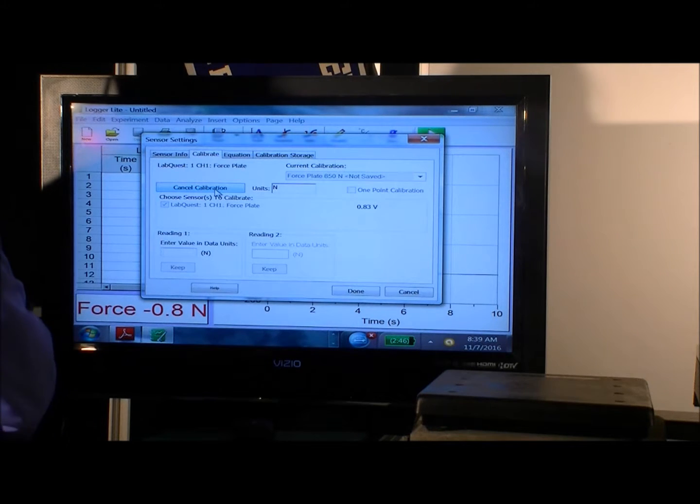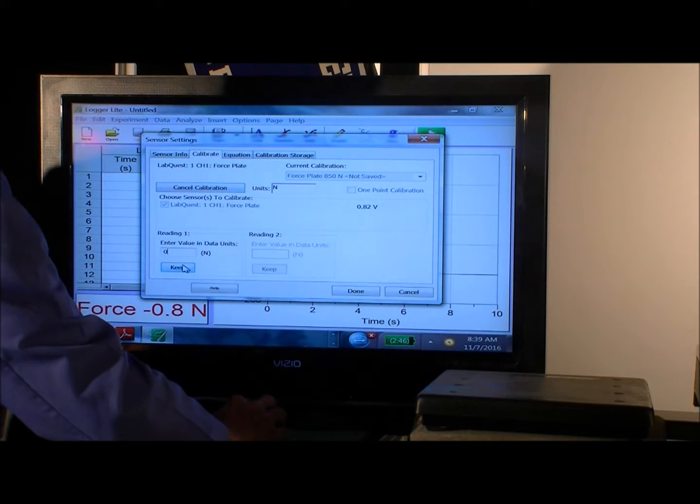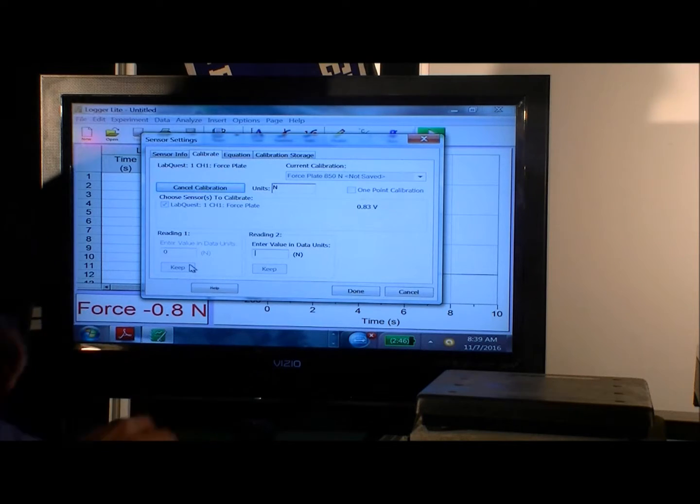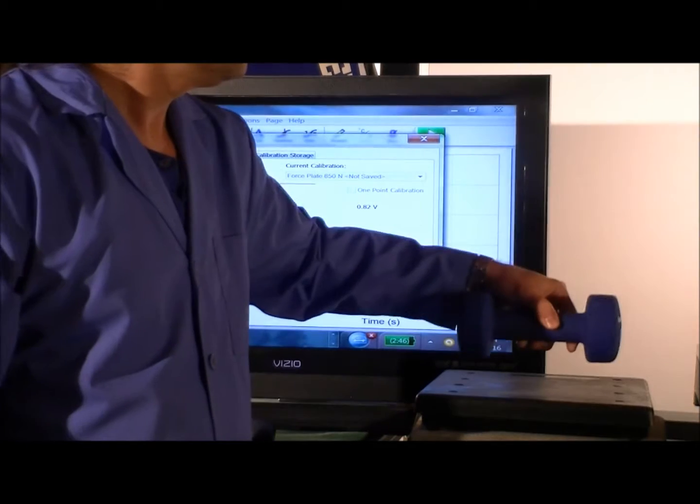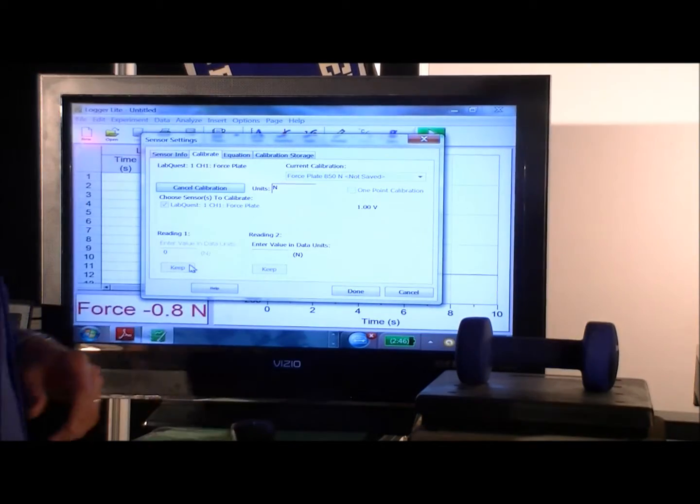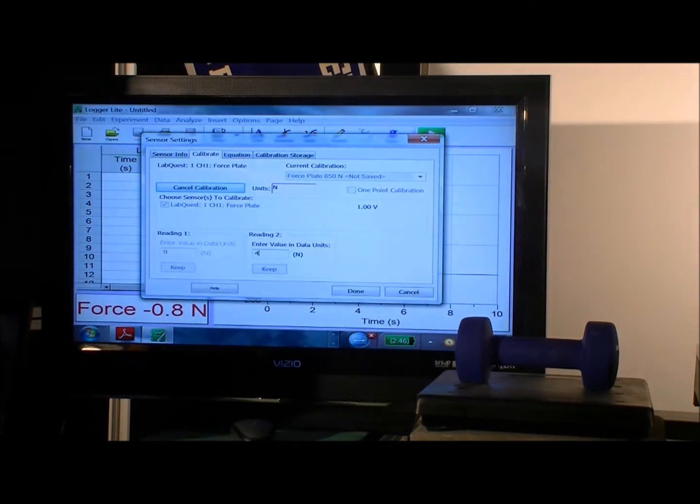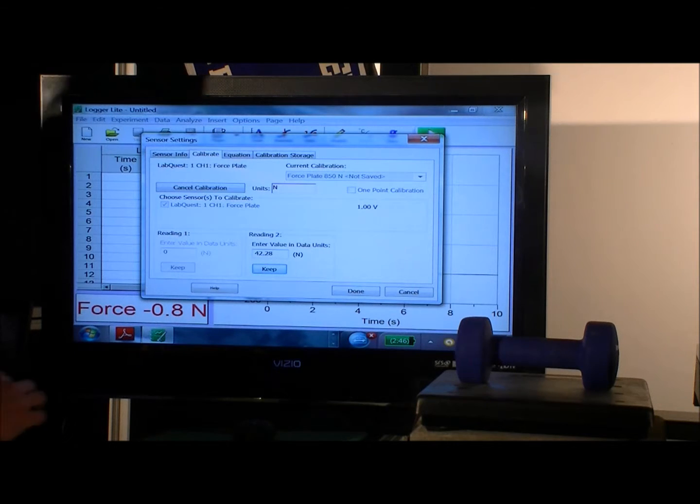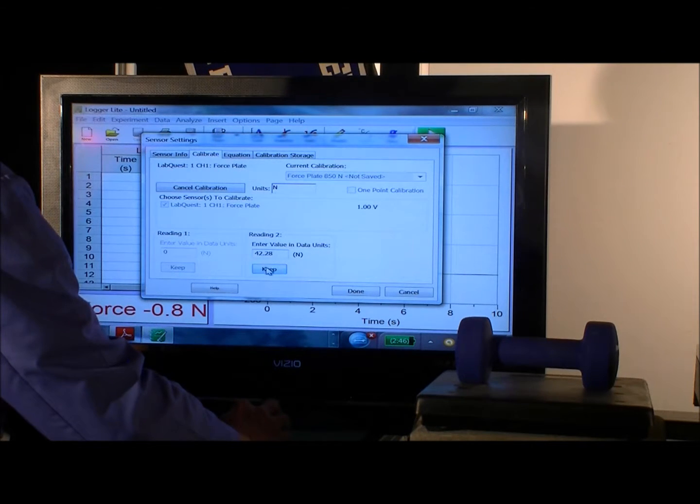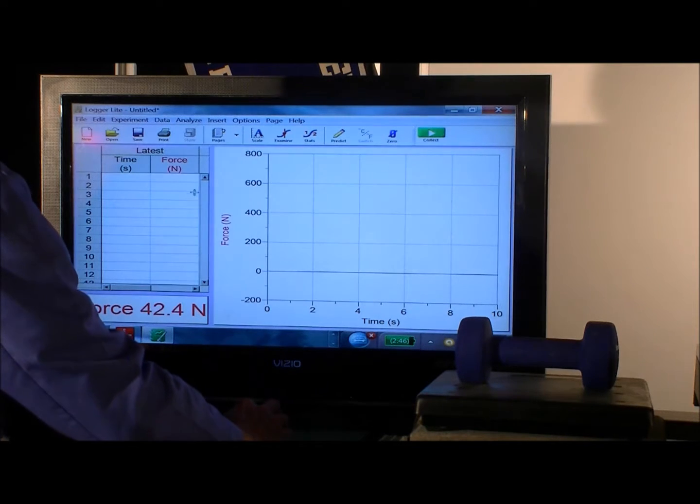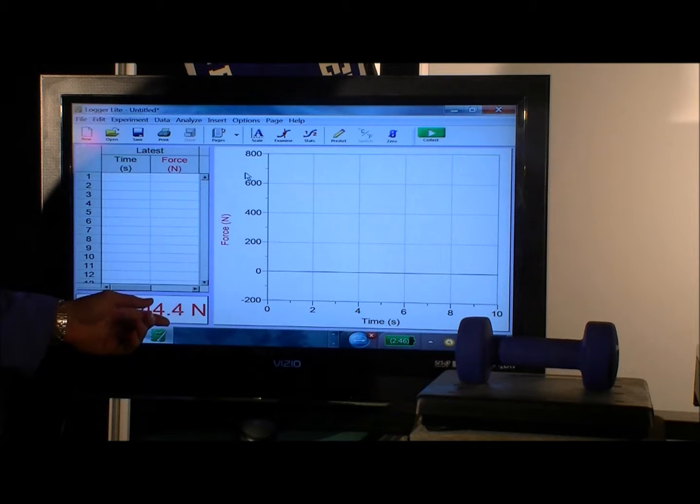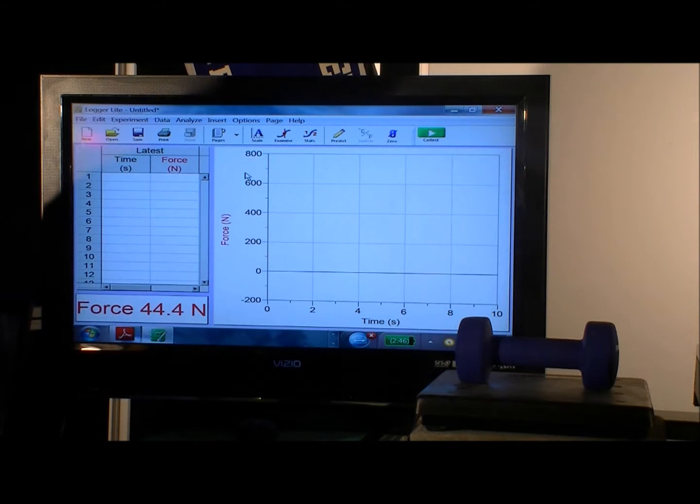Now in Newtons, and right now there's nothing sitting on the force plate, so we enter a zero Newtons because we know that the force applied on the force plate right now is zero Newtons. And then we put the 10 pound weight up there, and we put our 42.28 Newtons that we know corresponds to our 10 pound weight. We hit keep, then we hit done.